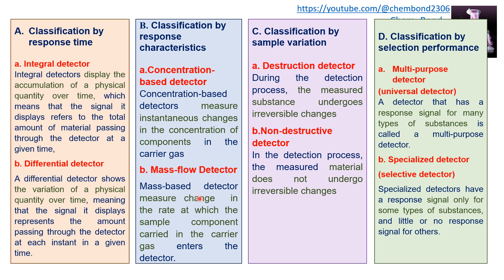If the flow of analyte in the effluent gas is stopped, a mass flow detector quickly destroys whatever is in it and the signal drops to zero. In contrast, a concentration-based detector can continue measuring concentration for as long as the analyte resides in the detector without the signal dropping to zero — it will obtain a constant signal. If the mass flow is stopped in a mass flow detector, the detector signal will be zero.